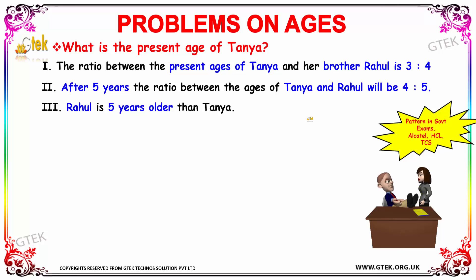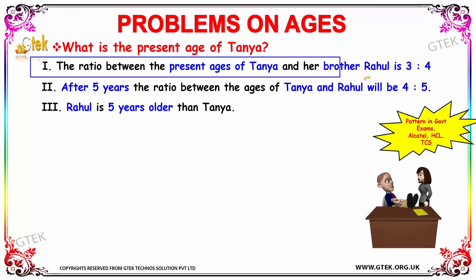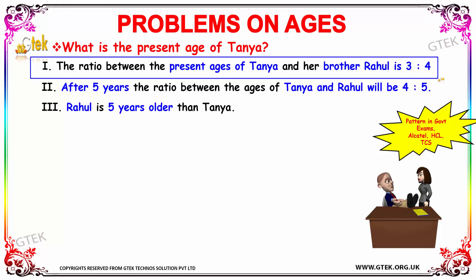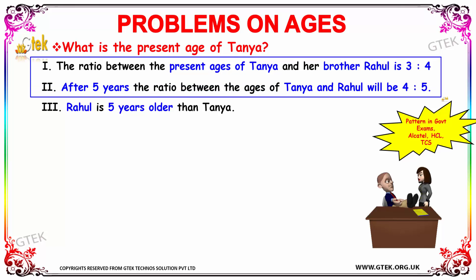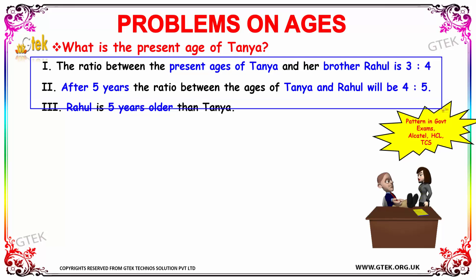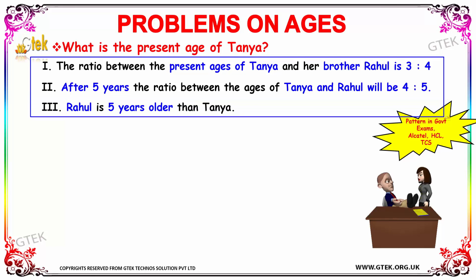We need to find the present age of Tanya. We are given three facts: the ratio between the present ages of Tanya and her brother is 3 to 4; after 5 years, the ratio between the ages of Tanya and Rahul will be 4 to 5; and Rahul is 5 years older than Tanya. These are the three facts we use to find the present age of Tanya.